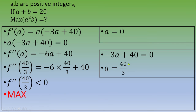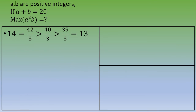However, 40 divided by 3 is not an integer, so we need to find the closest natural numbers. Since 40/3 lies between 39/3 and 42/3 — in other words, between 13 and 14 — A must be either 13 or 14.